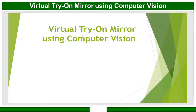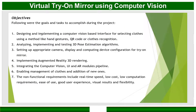Our objective was to achieve this using a computer vision algorithm. The objectives of our project: first, we need to select an algorithm for the computer vision selection of clothes. For that, we have the options of hand gesture, QR code, and clothes recognition. We have selected the QR code and even implemented it.